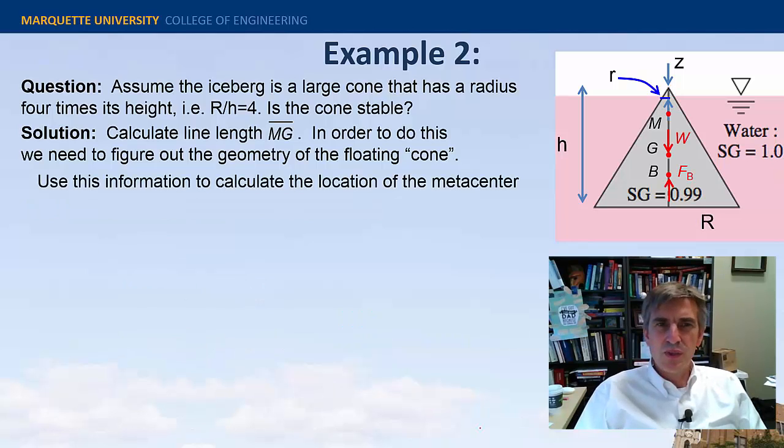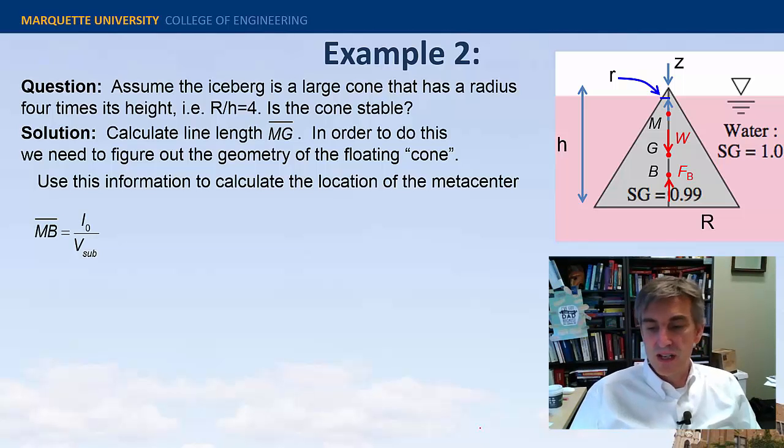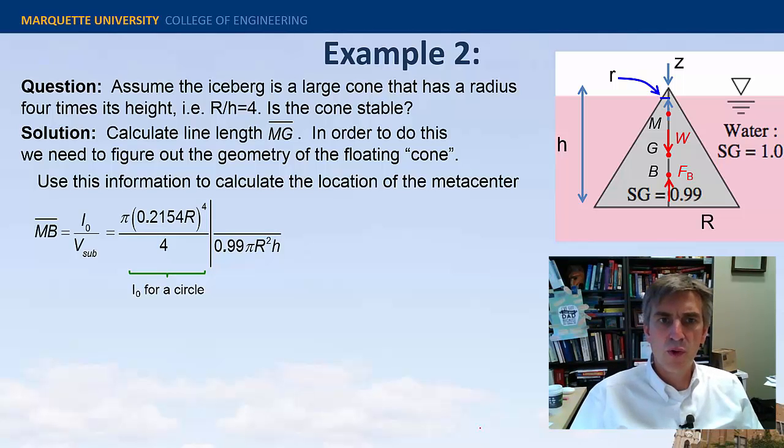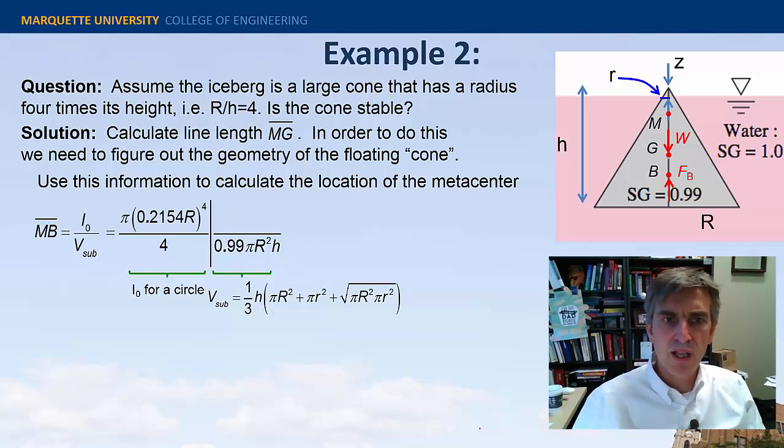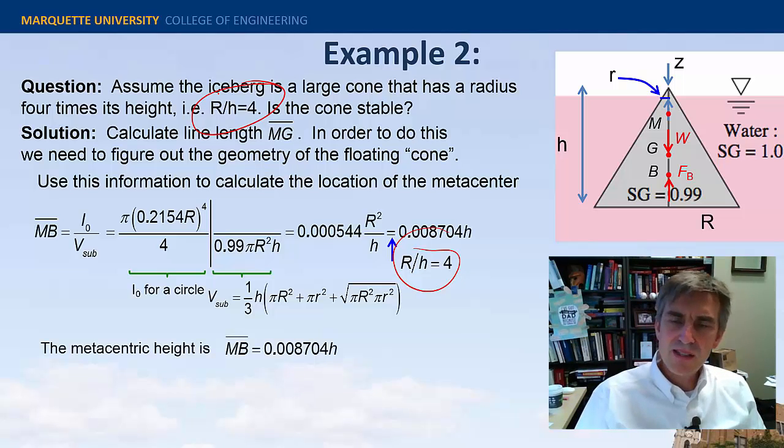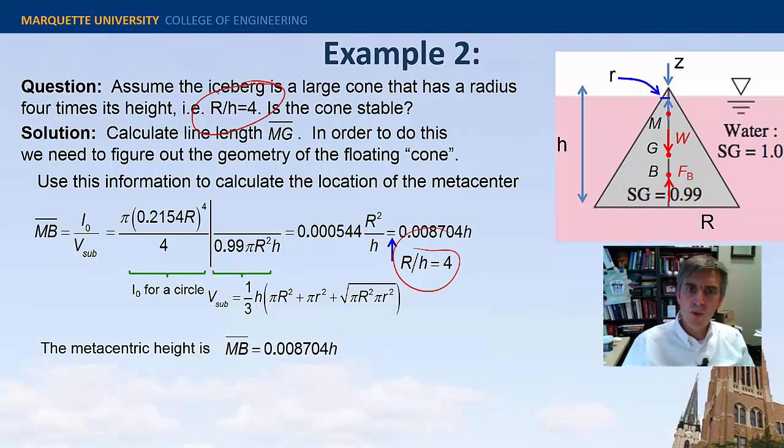All right. So, using this, we can now calculate where the metacenter is using this expression that it's the area moment of inertia divided by the submerged volume. So, this is the area moment of inertia for a circle, pi r cubed over 4 by the submerged volume. And so, that's the expression for the submerged volume for this frustum. And, plugging it all in, using the relationships that I got on the previous page, it simplifies to 0.99 pi r squared h. And so, I get this expression, r squared h. But, I'd rather write it in terms of just h. So, I can insert this geometry here that was given to give us just h. So, the metacenter height above the center of buoyancy is 0.0087 times h.